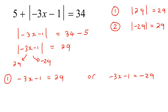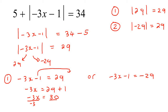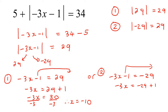Now we just solve. Taking minus 1 to the other side gives negative 3x equals 30. Dividing both sides by negative 3 gives x equals negative 10. For the second option, taking minus 1 to the other side gives negative 3x equals minus 29 plus 1, so negative 3x equals negative 28. Dividing both sides by negative 3 gives x equals 28 over 3.